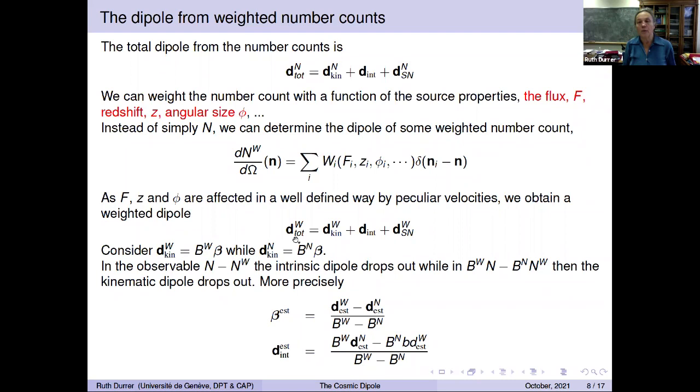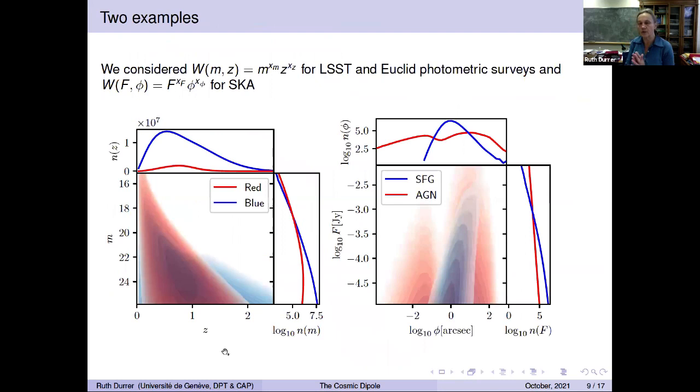The intrinsic dipole of the number counts is what it is. We assume it to be independent of these intrinsic properties, which is to some extent an assumption. The shot noise, however, will also be different for weighted counts. So now if you have measured d_W^top and d_N^top, you can just take this difference and divide it by the difference of the weights, and that should give you the estimate of beta. Or you can multiply the number counts with the weight of weighted ones and the weighted dipole with the weight of the number counts, and in this way isolate the intrinsic dipole. Of course, they are always still plagued by shot noise, so you need sufficiently many sources that shot noise is not limiting you too much.